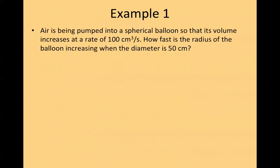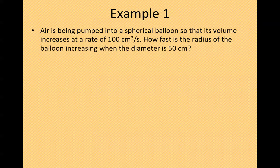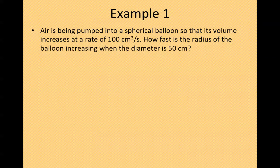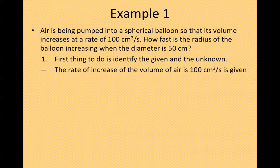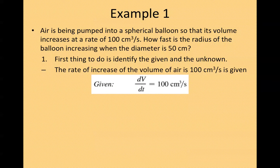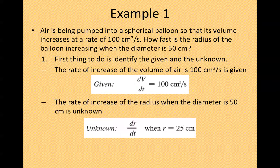Example 1. Air is being pumped into a spherical ball so that its volume increases at a rate of 100 cm³ per second. How fast is the radius of the balloon increasing when the diameter is 50 cm? First thing to do is identify the given and the unknown. The rate of increase of the volume of air, 100 cm, is given and the rate of increase of the radius when the diameter is 50 cm is unknown.